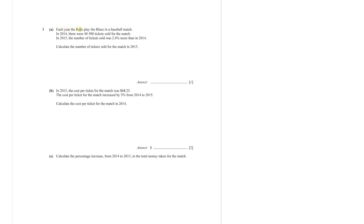Question number 1: each year the Reds plays the Blues in a baseball match. In 2015, there were 40,500 tickets sold for the match. The number of tickets sold in 2015 was 2.4% more than in 2014. Calculate the number of tickets sold in 2014. The tickets sold in 2015 are 102.4% of the tickets sold in 2014, which are 40,500.